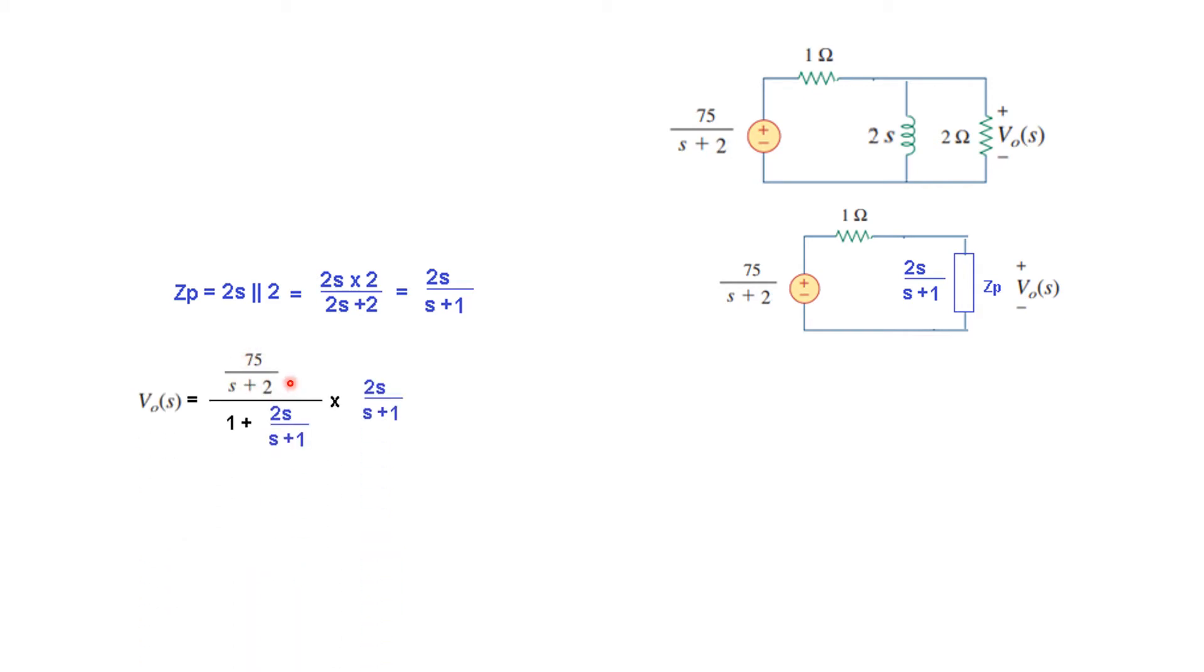So by voltage division rule we get VOS, total voltage, this total voltage, divided by total impedance and multiplied by this impedance. Solving, we find 150S divided by S plus 2 into 1 plus 3S. I hope you can follow this how we came here.